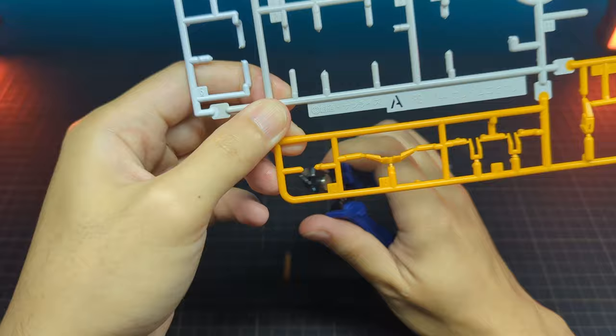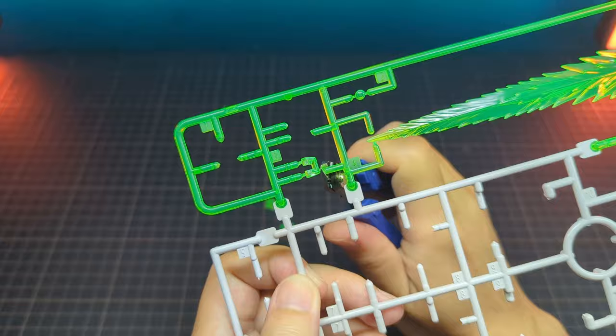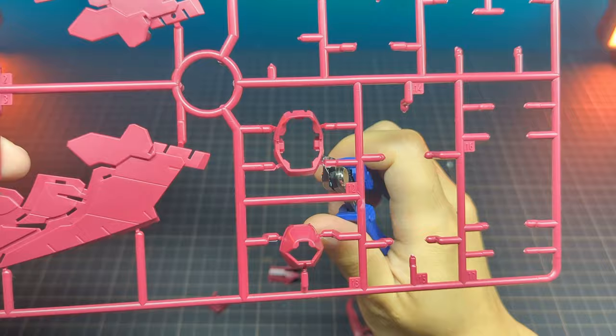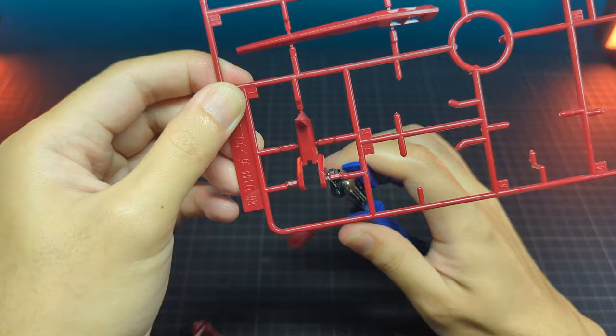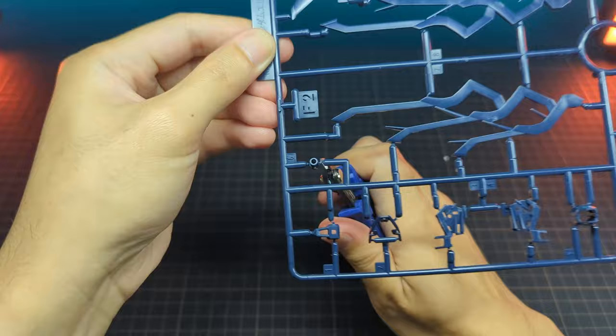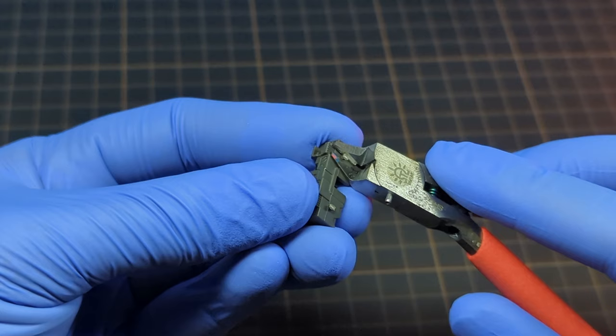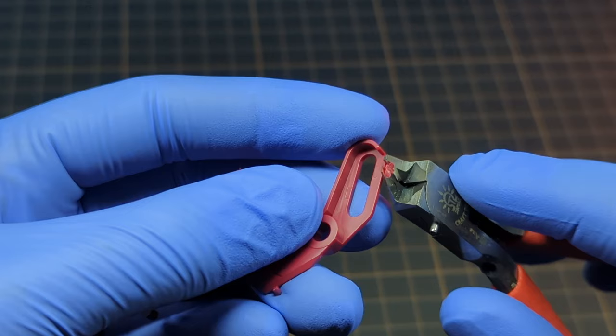I removed the parts from runners with the two-cut method. First cut with a regular nipper about half a centimeter away from the part, and the second cut with a single blade nipper closer to the part.